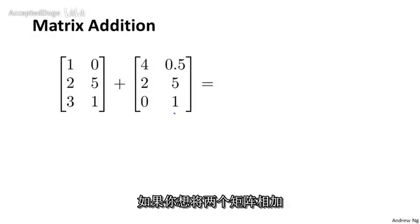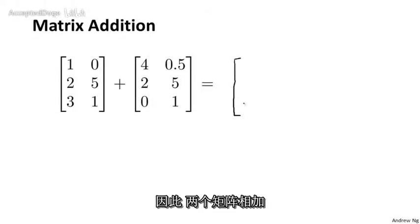It turns out that if you want to add two matrices, what you do is you just add up the elements of these matrices one at a time. So my result of adding two matrices is going to be itself another matrix. And the first element I get just by taking 1 and 4 and adding them together, so I get 5.